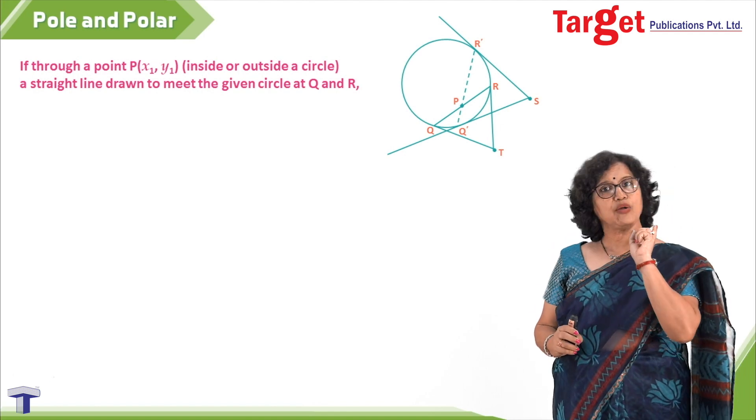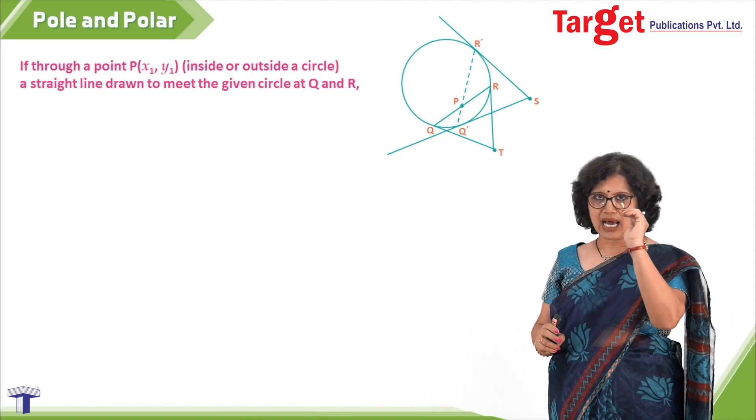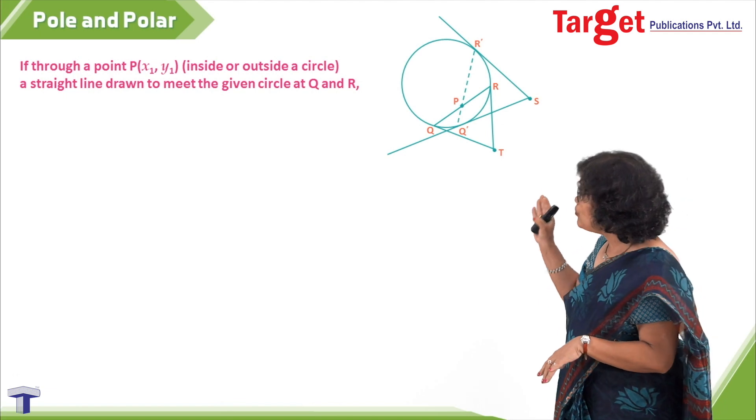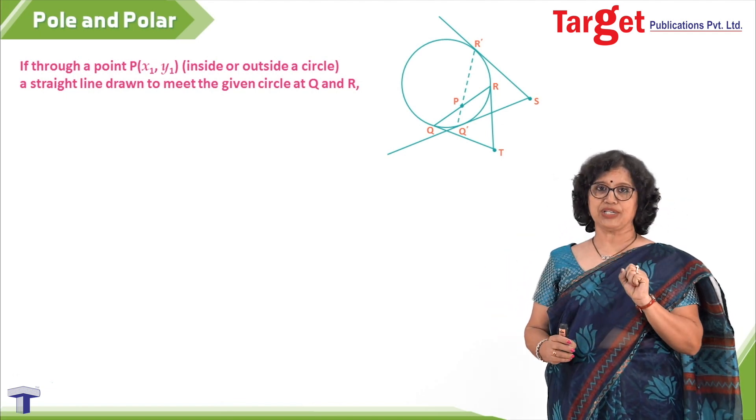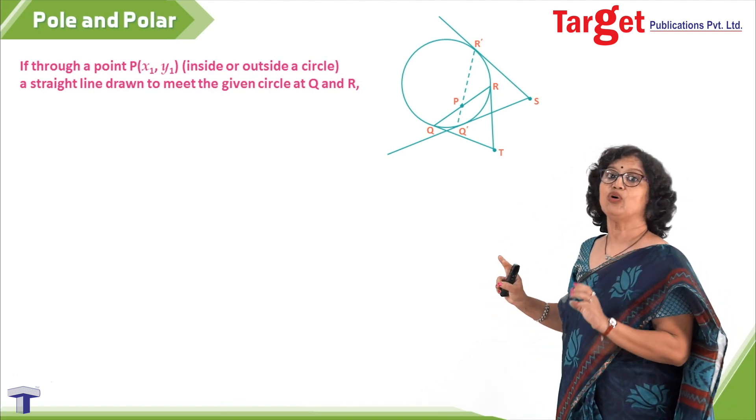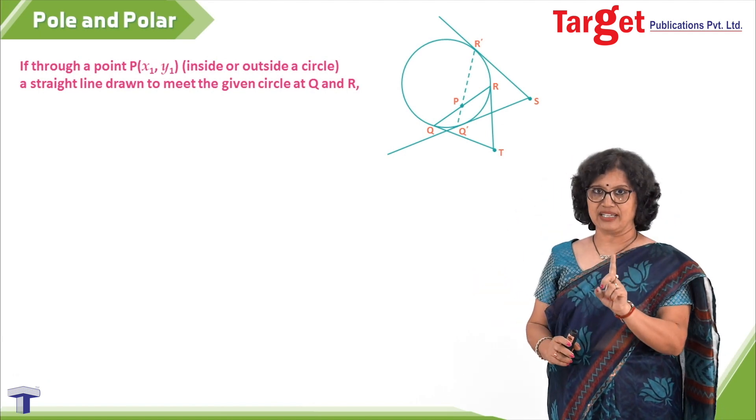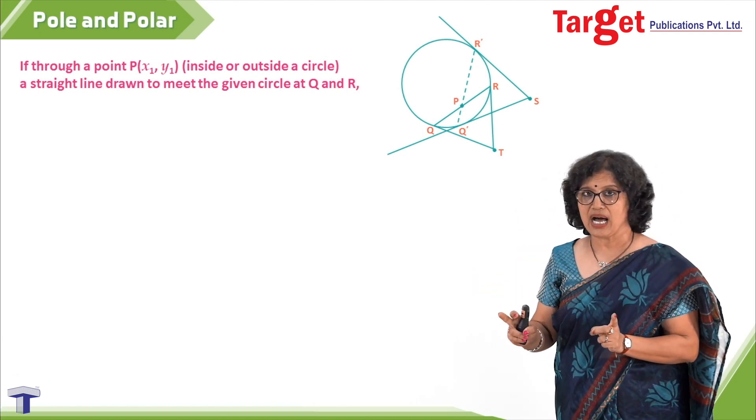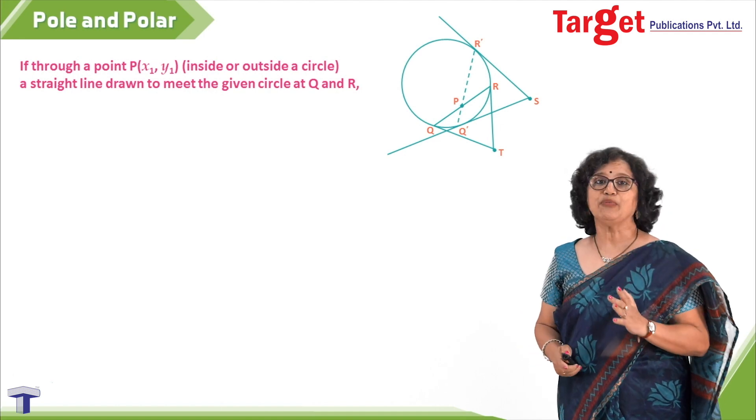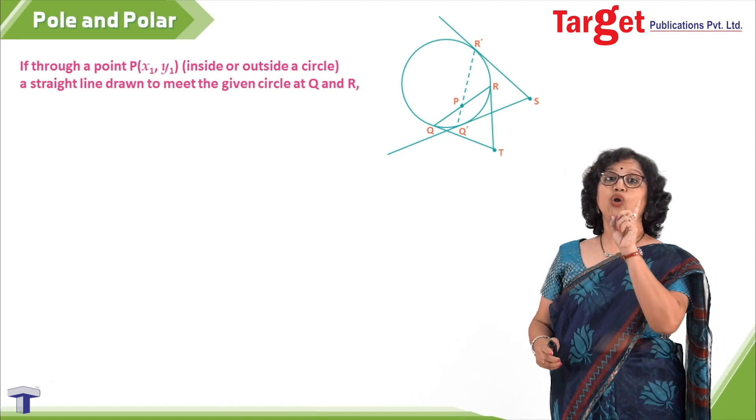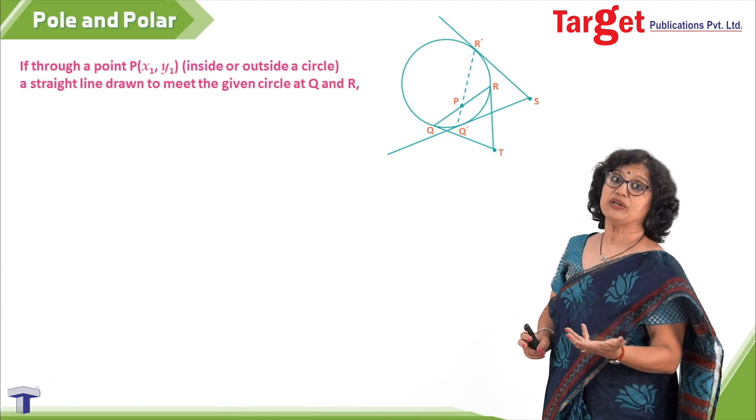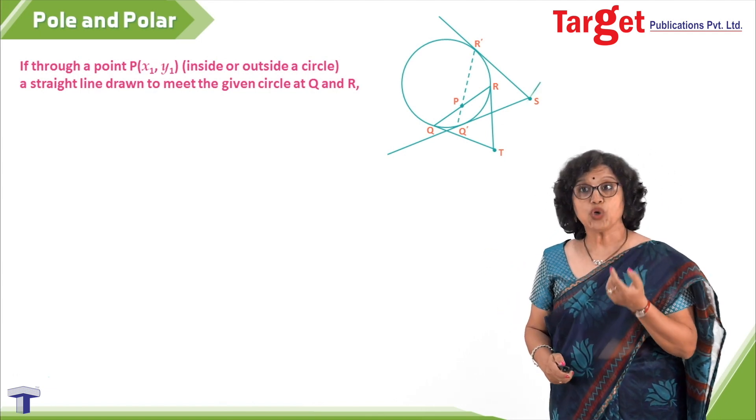As Q and R move or change their positions, obviously position T also changes. Point of intersection of tangents drawn at Q and R is a varying position, and hence the locus of point T can be observed or understood.